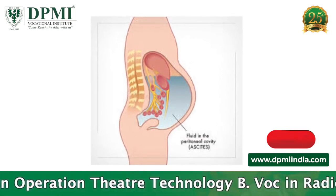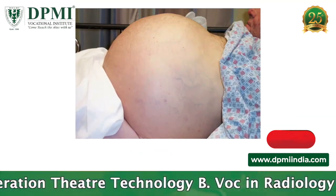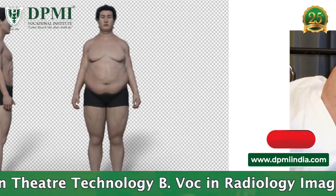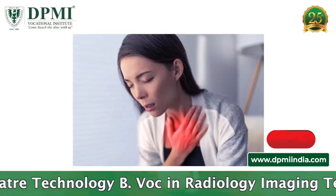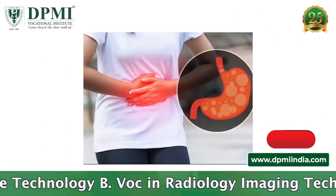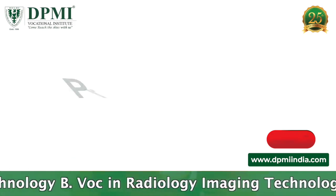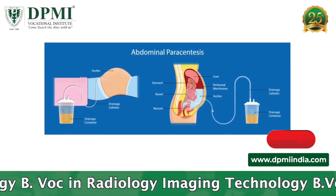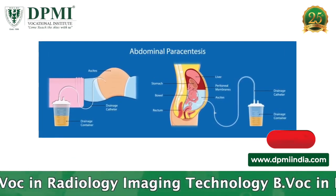The main symptoms of ascites are: increase in the size of the abdomen, rapid weight gain, shortness of breath, bloating, and abdominal pain. Paracentesis generally takes about 20 to 30 minutes.